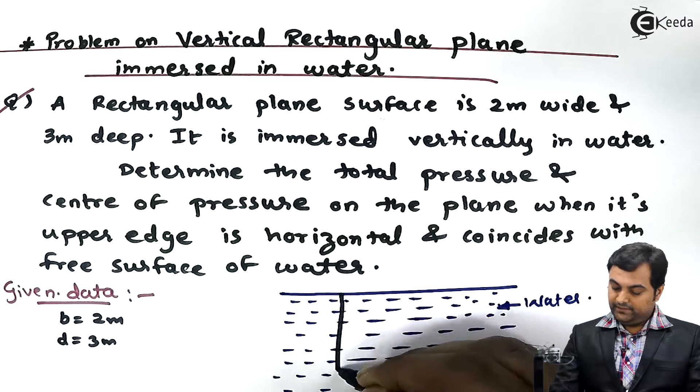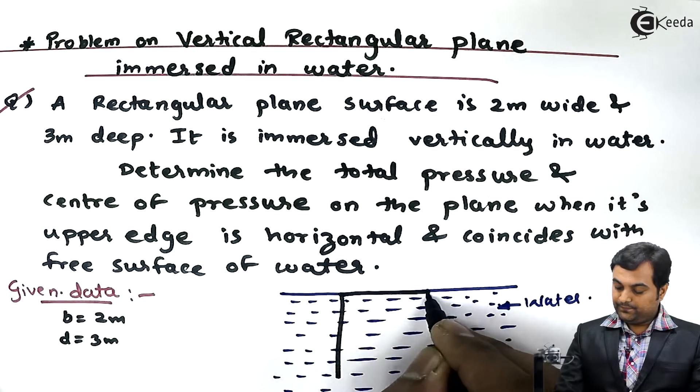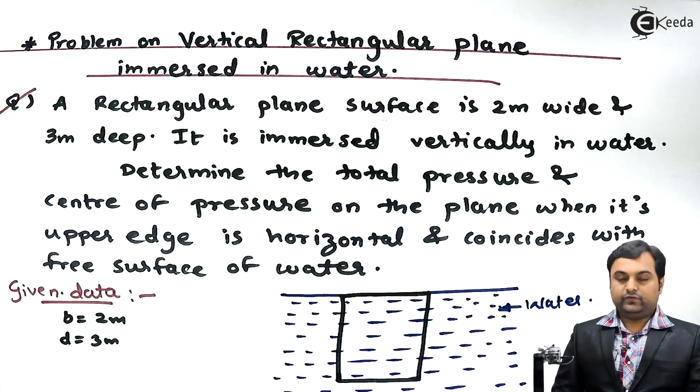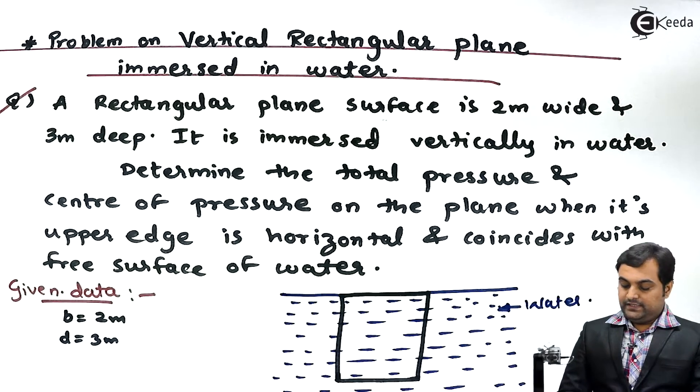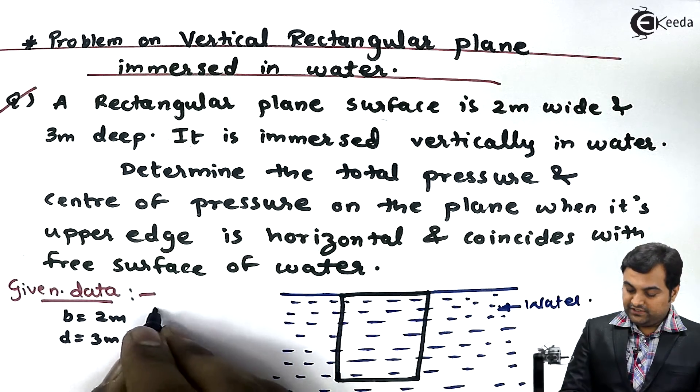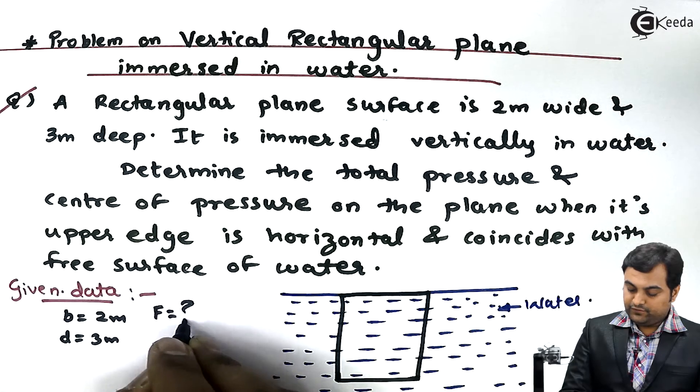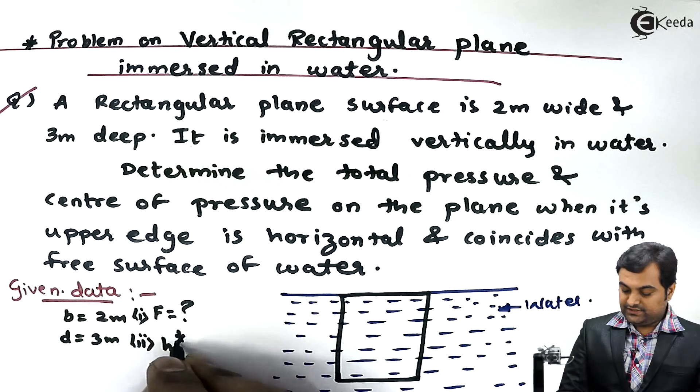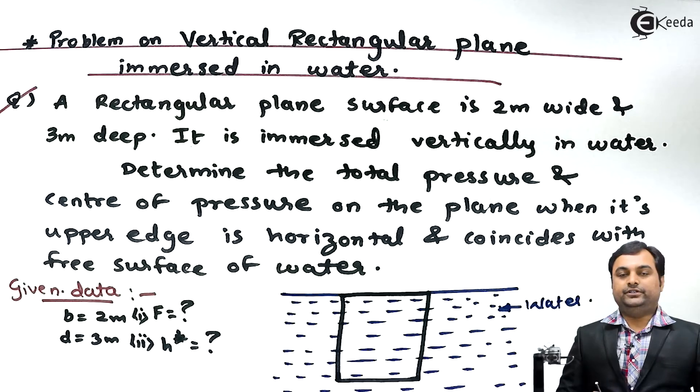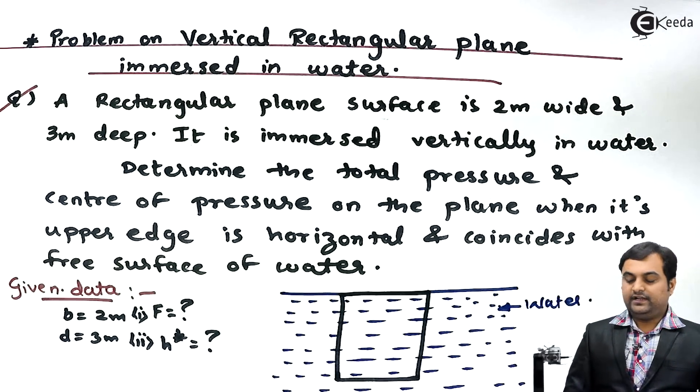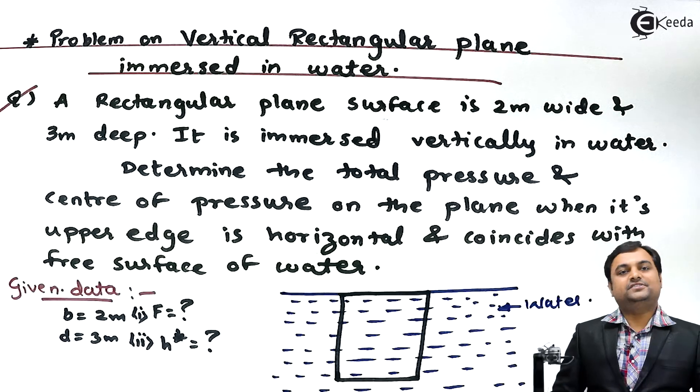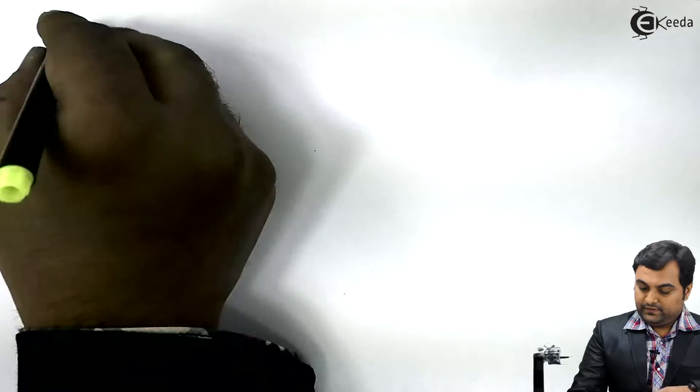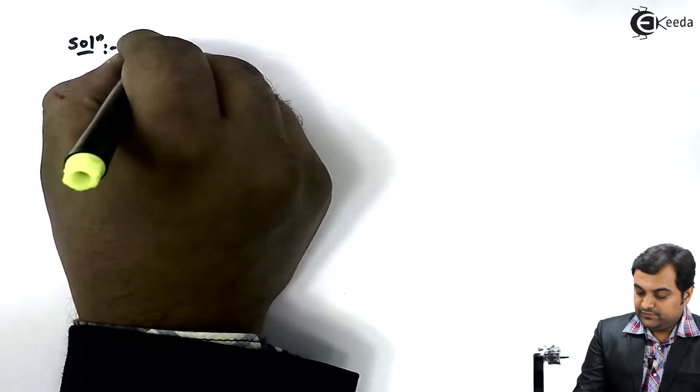The rectangular plane is coinciding with the free surface of water, so like this the rectangular plate is kept. Now we have to find out the total pressure, which is nothing but hydrostatic force, and center of pressure means H star. We have to find out a single point where this hydrostatic force acts. With these data available, let us try to get the solution for this problem.